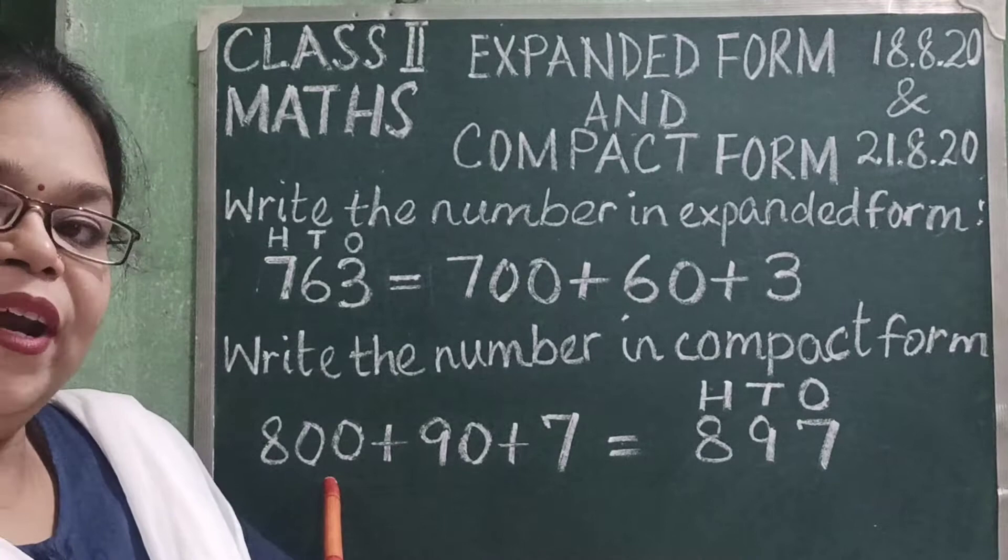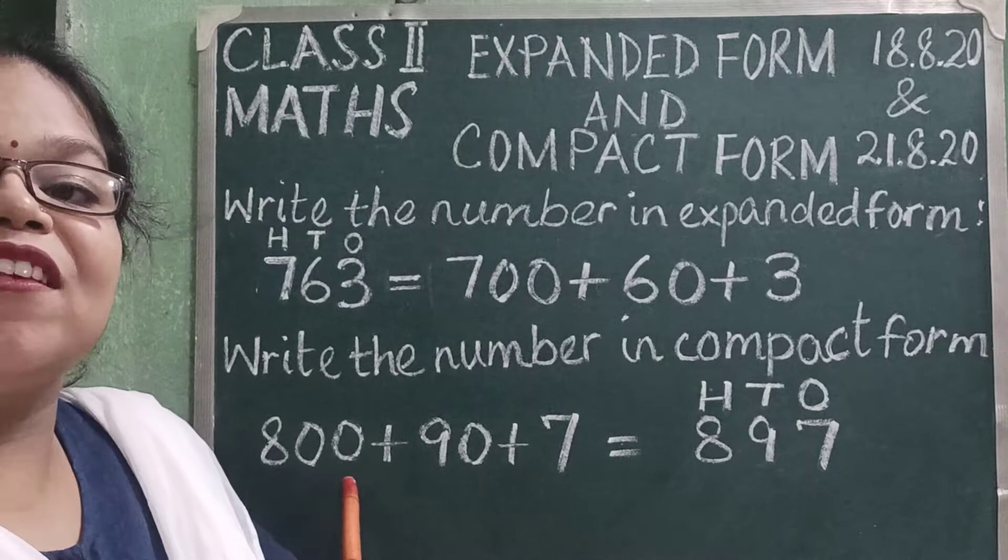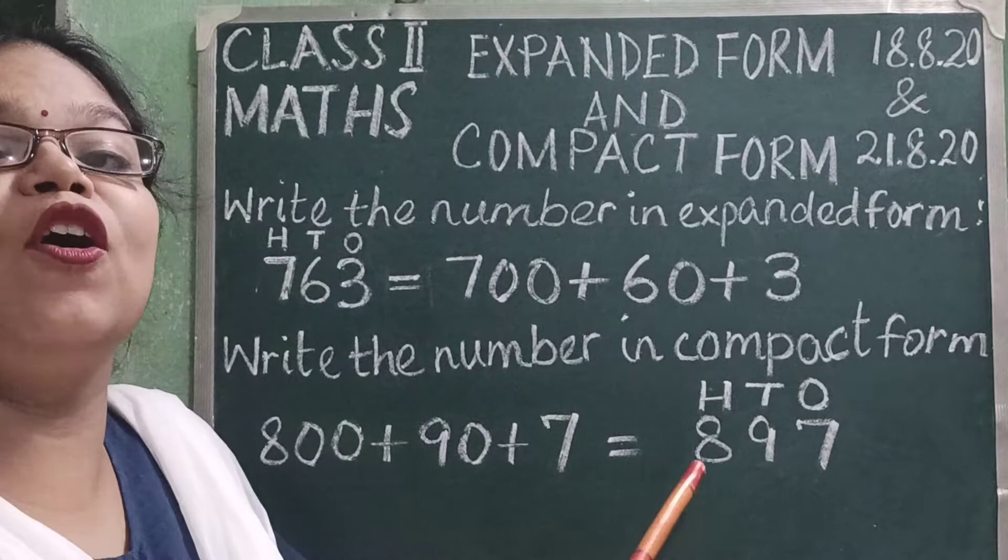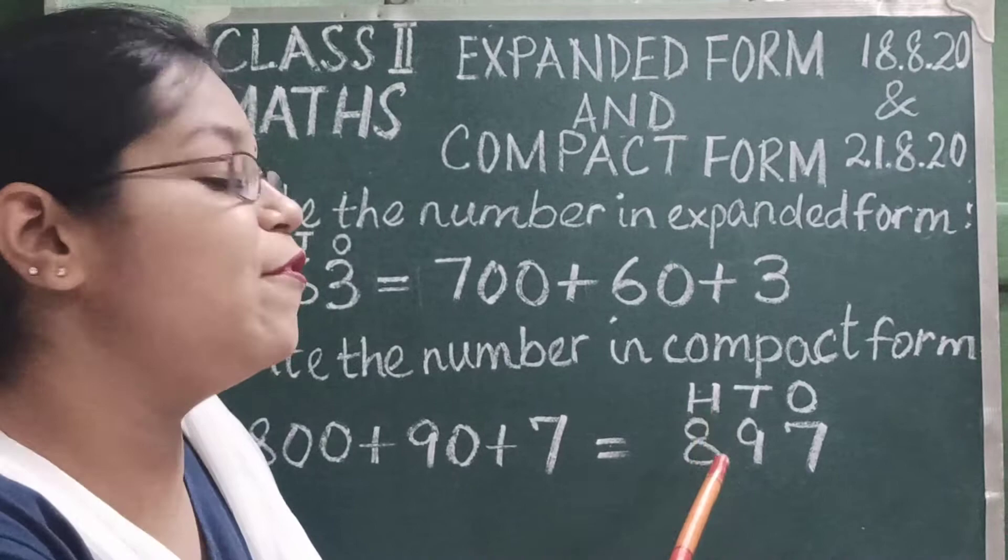Children, see, 8 has got two zeros. We all know that when the digit is in 100's place, it has got two zeros. So we have written 8 under the 100's place.